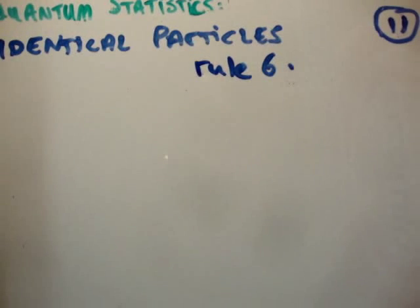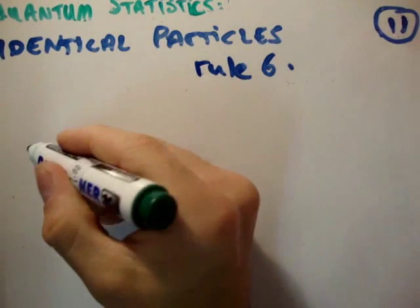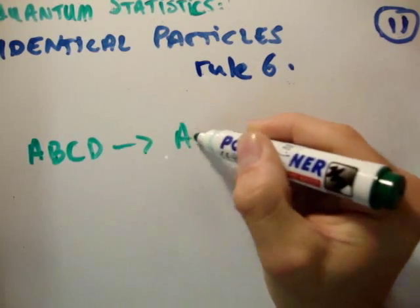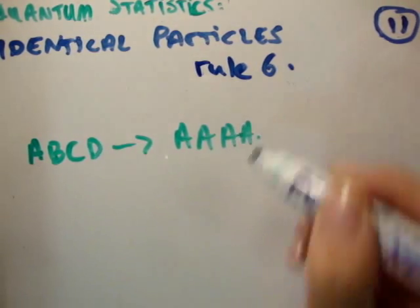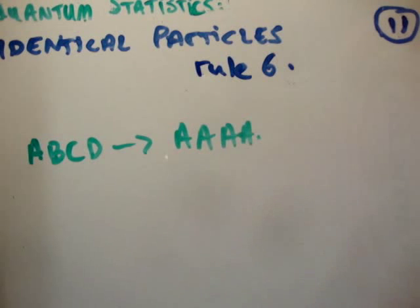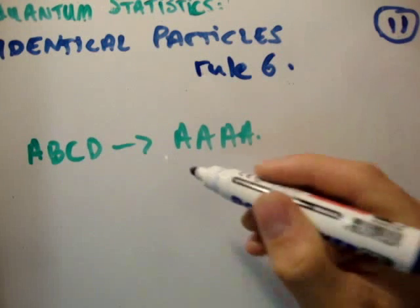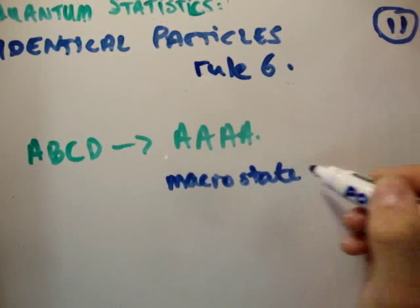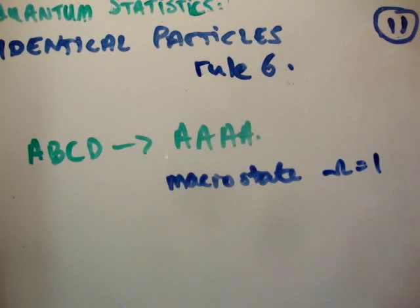So, what I'm going to talk about now is identical particles. Let's say we went from A, B, C, and D to 4 A's. Okay? Well, if you've been following my previous videos, you know that the macro state, the only macro state, the multiplicity of it is equal to 1. And I'm going to show you why the multiplicity is equal to 1 right now.